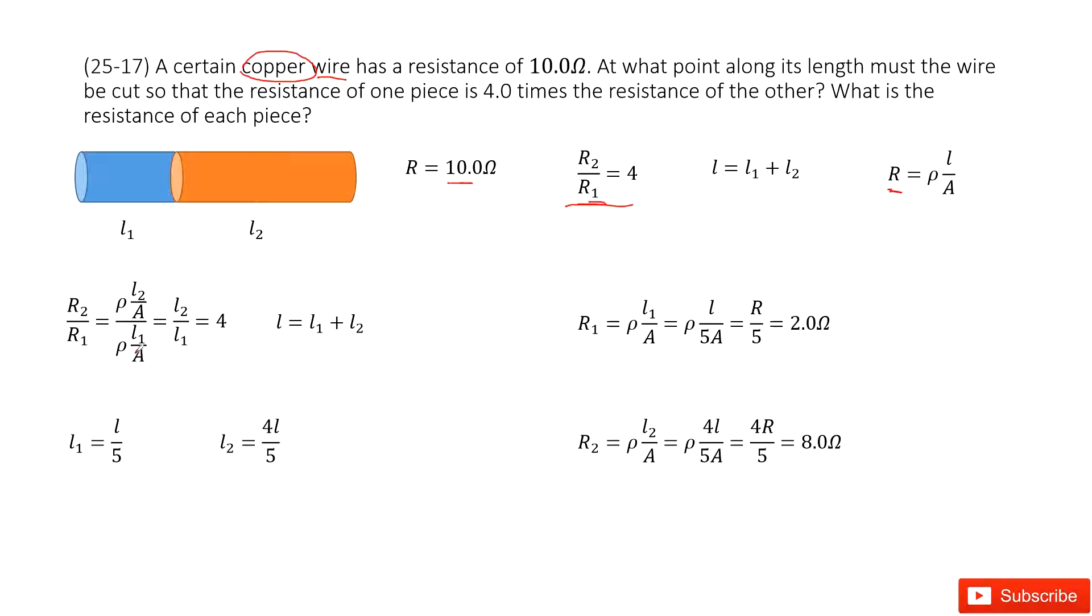Now you simplify this function and get the term L2 over L1 equals 4. This is the first equation. The second equation is L equals L1 plus L2. You have two equations, so you can easily get L1 and L2 in terms of L.